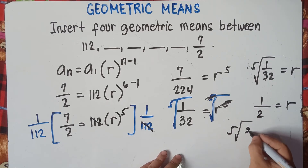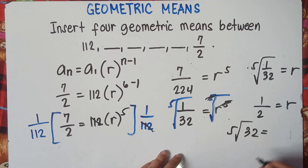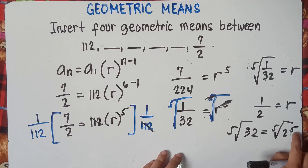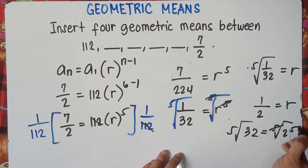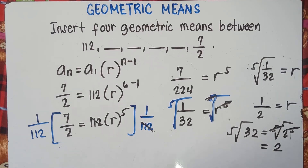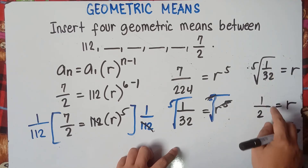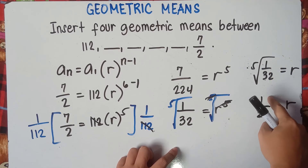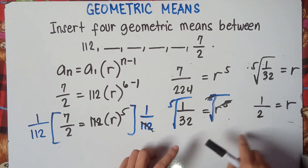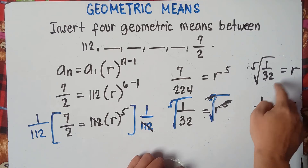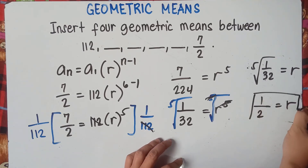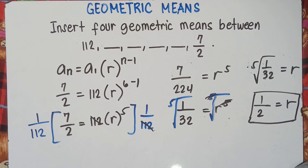The fifth root of 32 is 2, because you can write it as the fifth root of 2 raised to the power of 5, and the 5s cancel out, giving 2. The fifth root of 1 is 1. So our common ratio r is 1 over 2, which is 1 half.